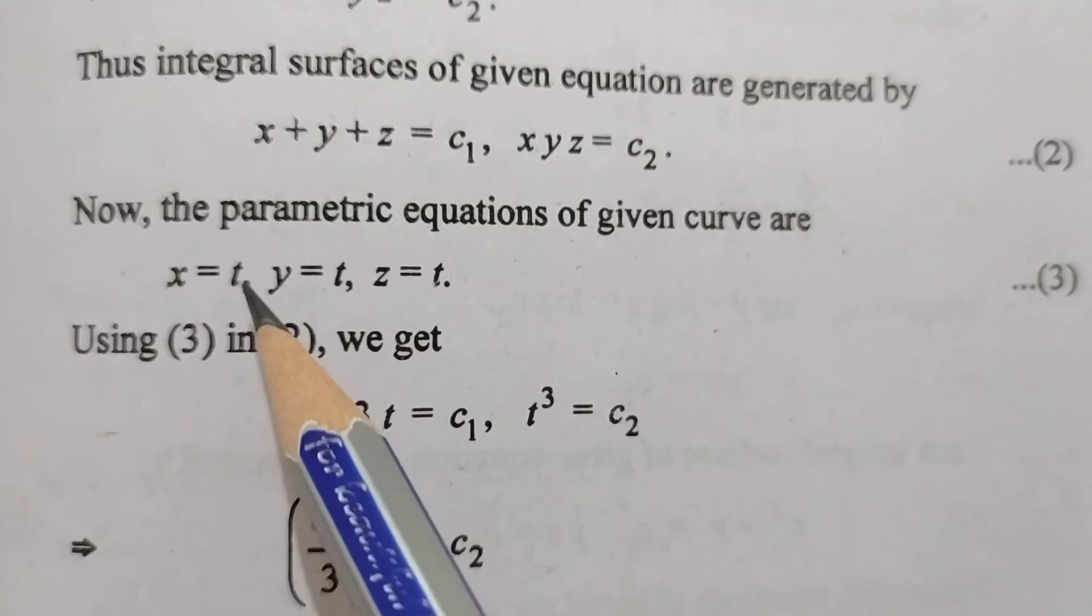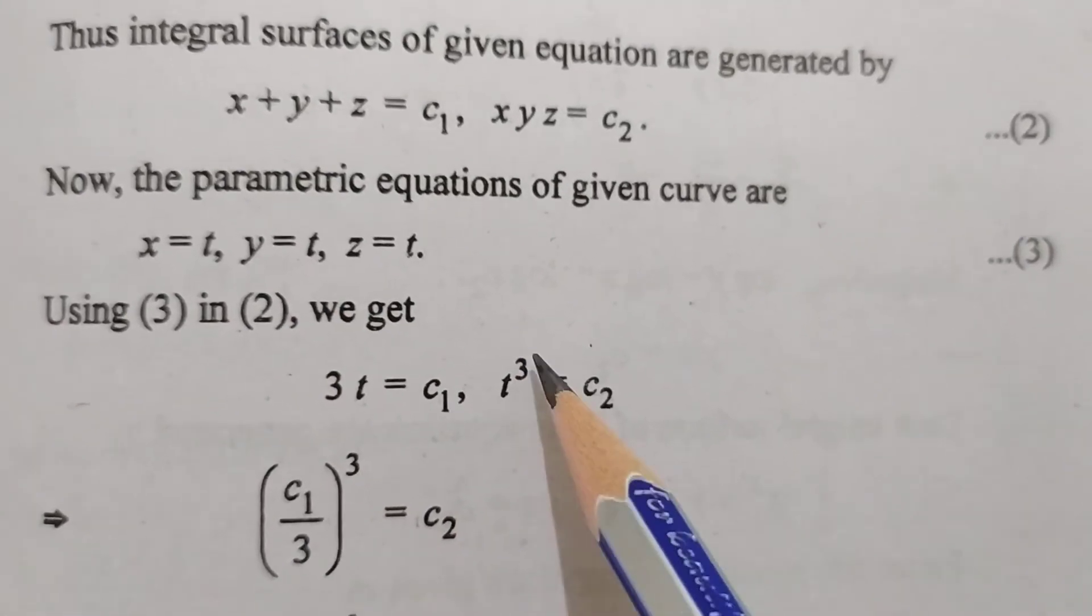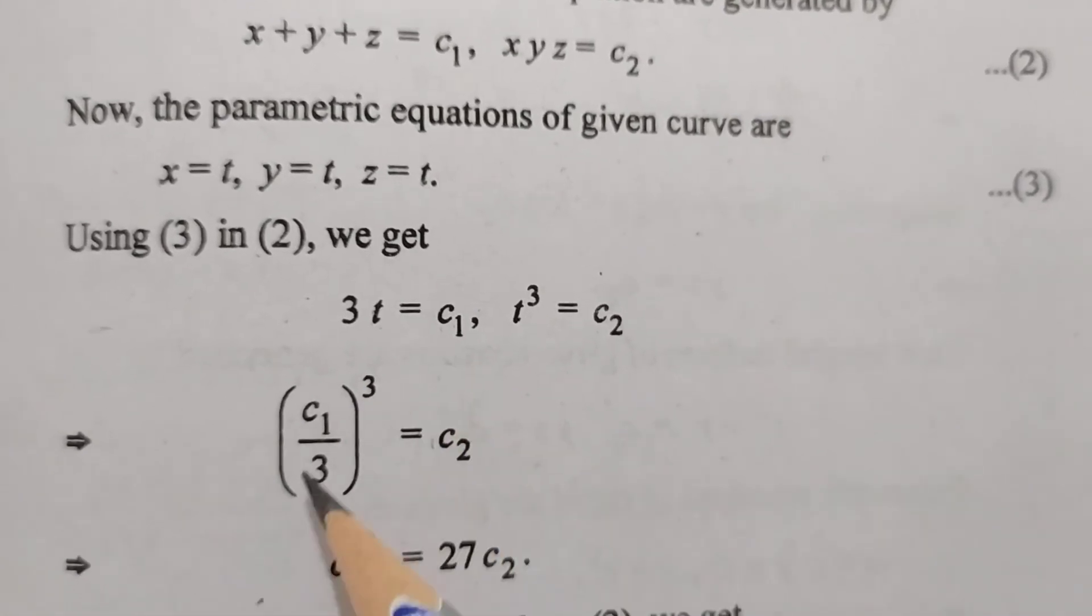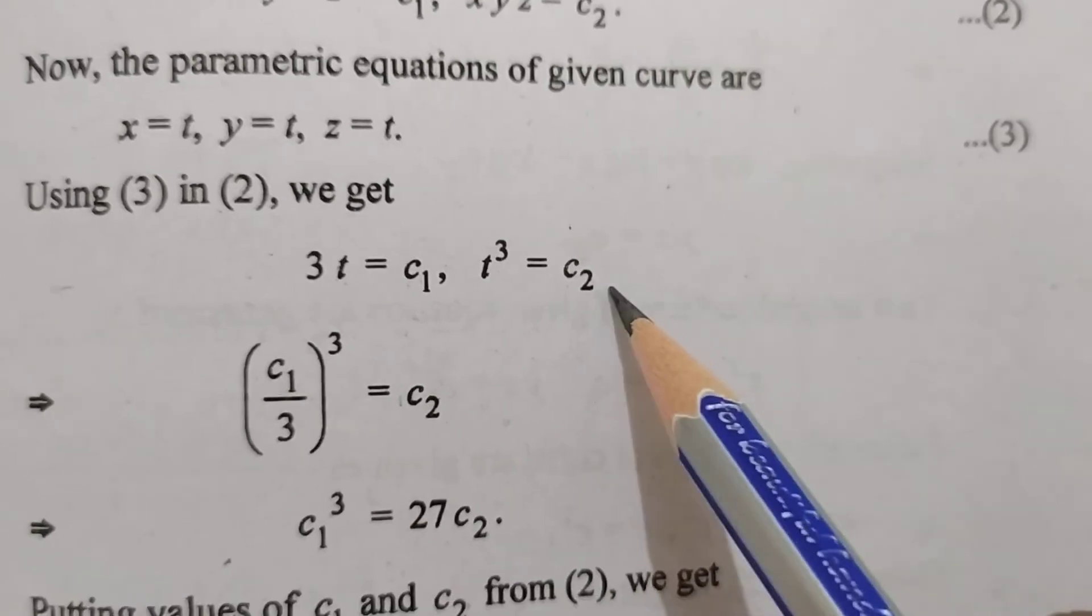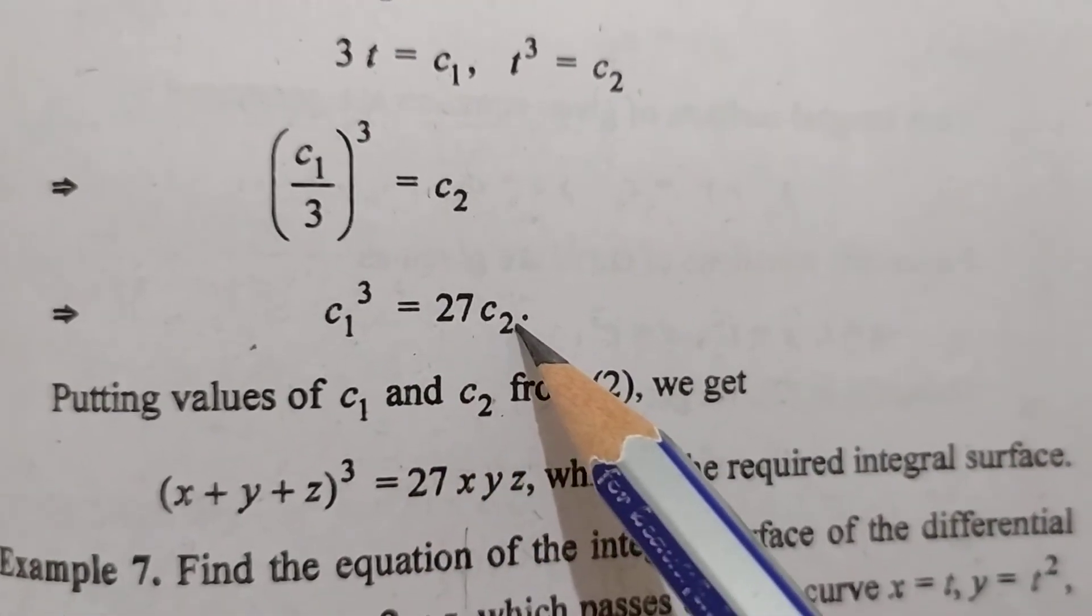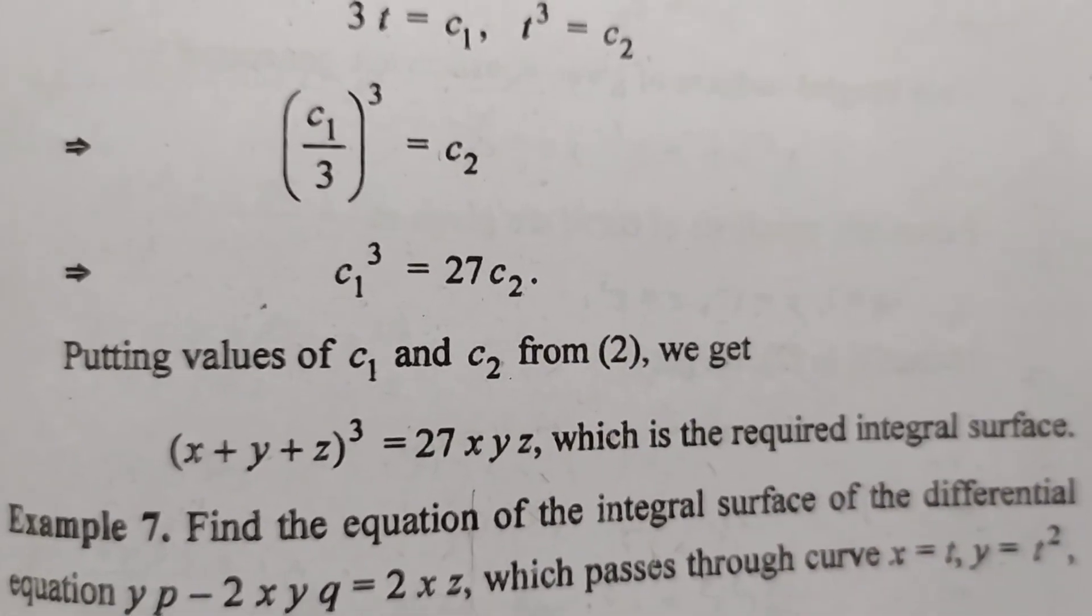Using these in equation (2), we get t+t+t=3t=c1 and t³=c2. Therefore, (c1/3)³=c2, which gives c1³=27c2. Putting values of c1 and c2 from (2), we get (x+y+z)³=27xyz, which is the required integral surface.